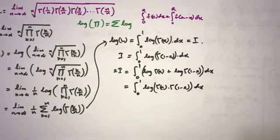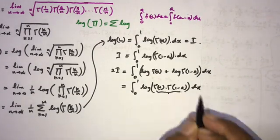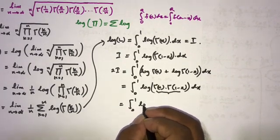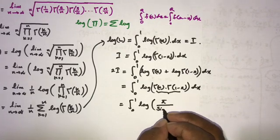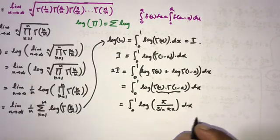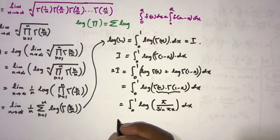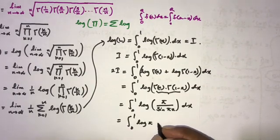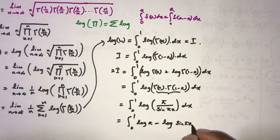Using Euler's reflection formula, gamma(x) times gamma(1 minus x) equals pi over sine(pi·x). So we substitute this in, and by the property of natural log, we get: 2I equals the integral from 0 to 1 of natural log of pi minus natural log of sine(pi·x) dx.